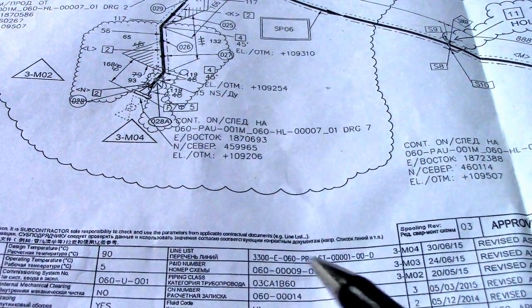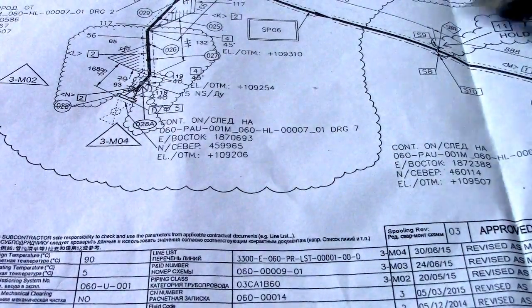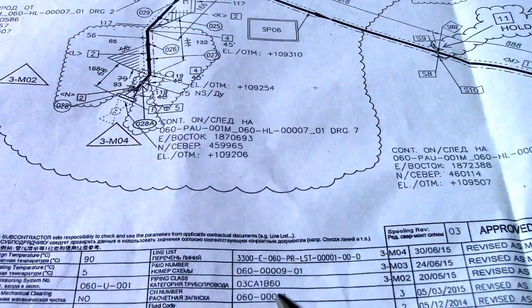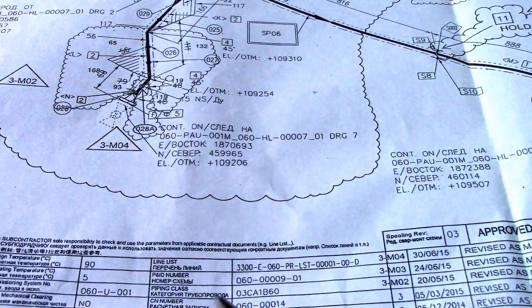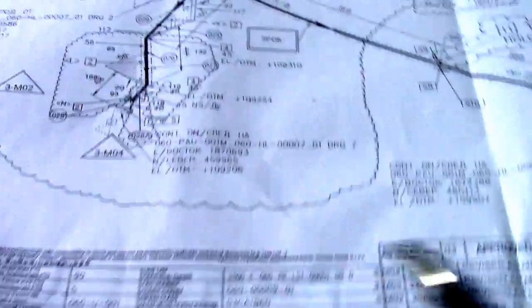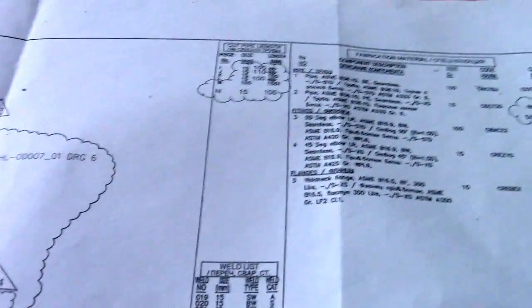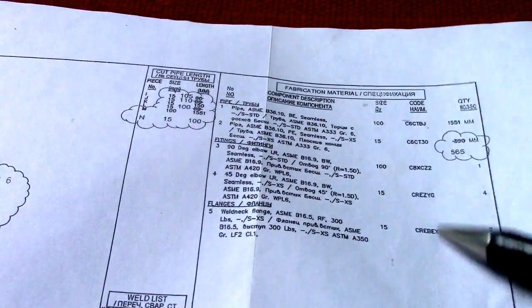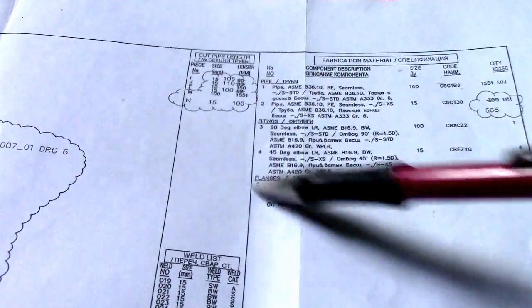We also have the line list and P&ID number. This is the P&ID number — if you want to check this line in the P&ID, check here for the number you will find in the P&ID. This is P&ID 5P class. All of this is here in this table.